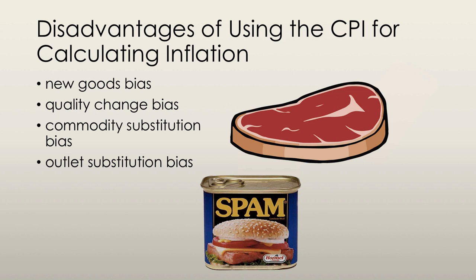We also have the commodity substitution bias. Changes in relative prices lead consumers to change the items they buy, and the substitute good might provide the same value but cost less. For example, substituting spam for steak — spam is a lot cheaper, and assuming it gives you the same value, you'll buy more spam and less steak. Because spam is cheaper, the overall CPI value goes down, so the CPI underestimates the rate of inflation.